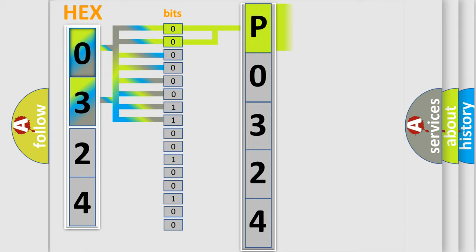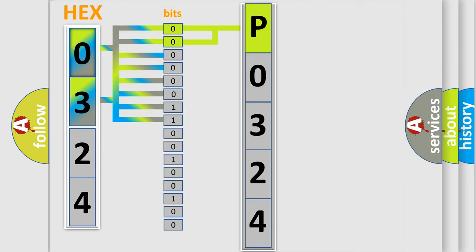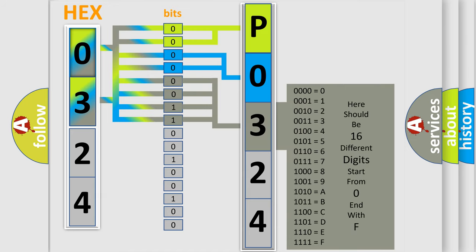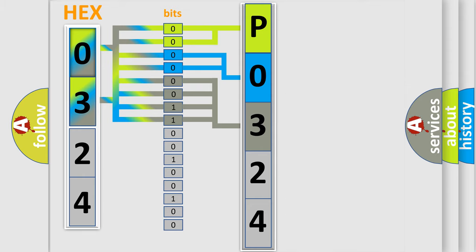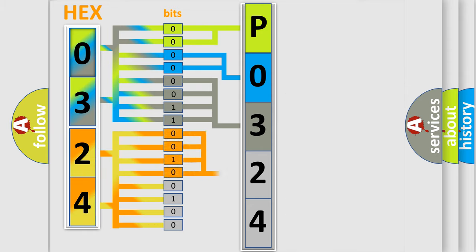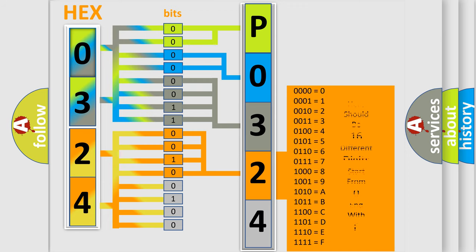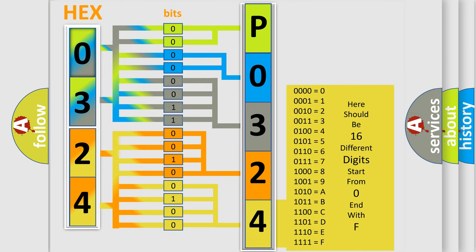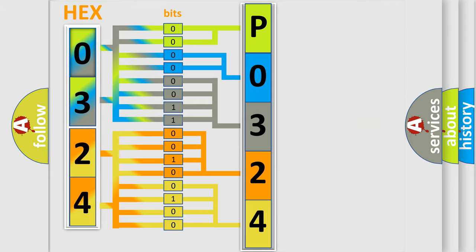By combining the first two bits, the basic character of the error code is expressed. The next two bits again determine the second character. The last four bits of the first byte define the third character of the code. The second byte is composed of a combination of eight bits — the first four bits determine the fourth character, and the combination of the last four bits defines the fifth character. A single byte conceals 256 possible combinations.